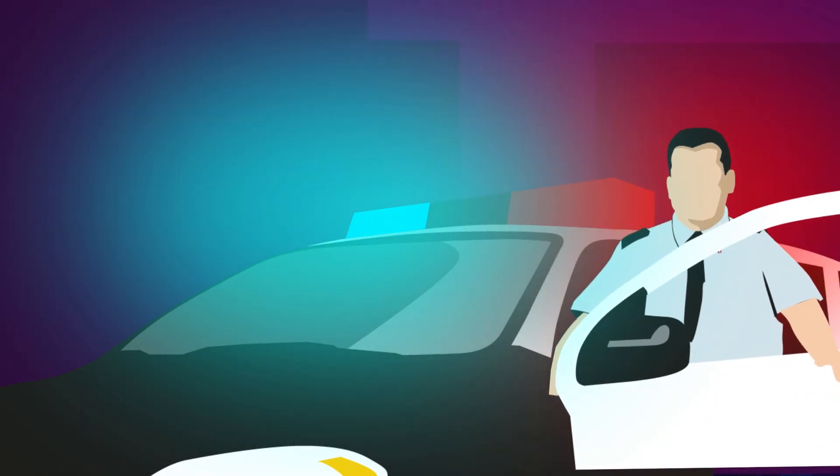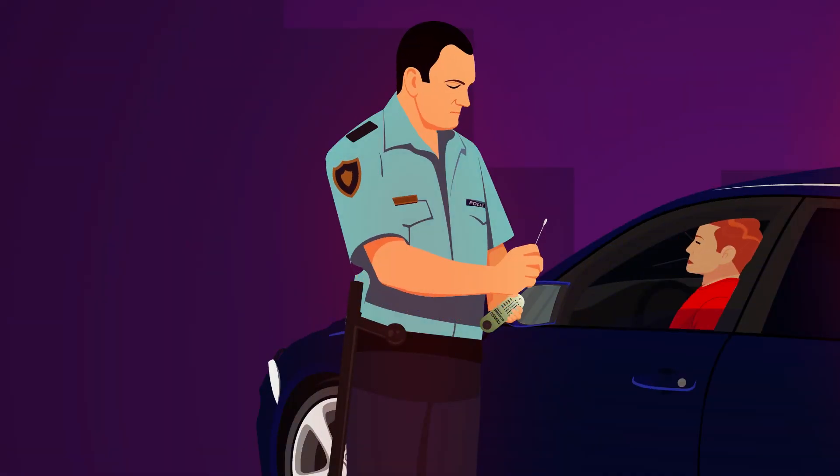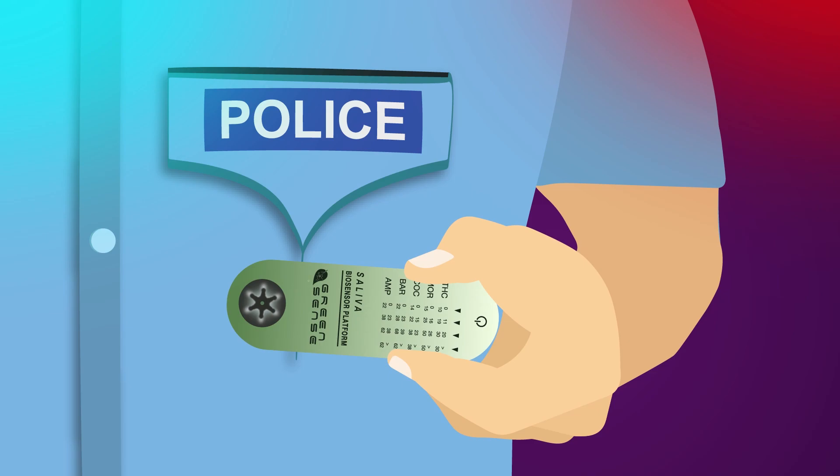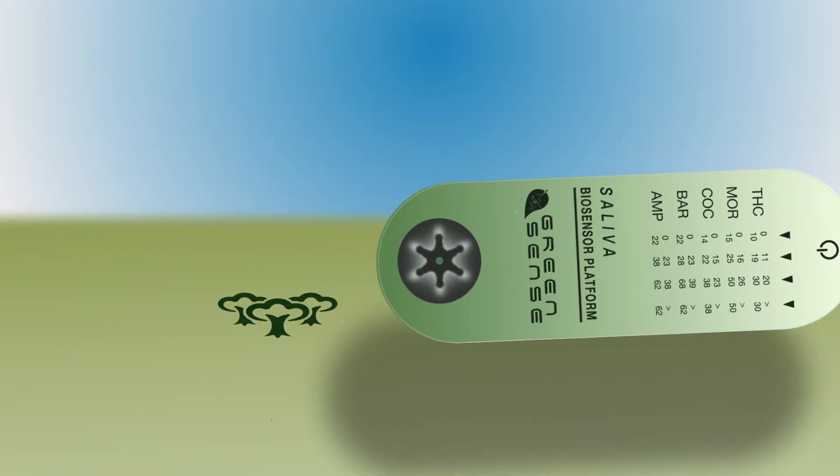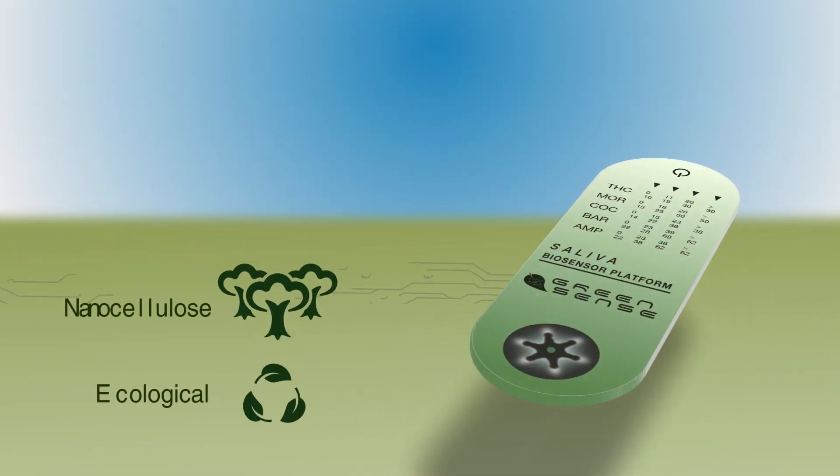However, these drugs are hard to detect by police officers. By combining nanocellulose with innovative concepts, GreenSense provides a new solution: a smart and ecological drug detector device.